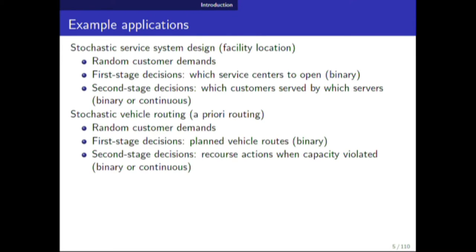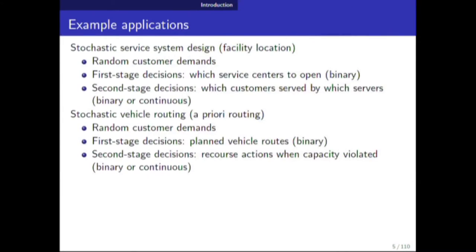Another example is stochastic vehicle routing — specifically a priori routing — where you choose a route in advance and follow it. The customer demands to be picked up along the route are uncertain. The first stage decision is the planned vehicle routes: where the trucks will go and visit customers. The second stage decision handles recourse, for example if the truck fills up before completing the whole route. That typically involves binary re-routing decisions in the second stage, making it a challenging two-stage problem.